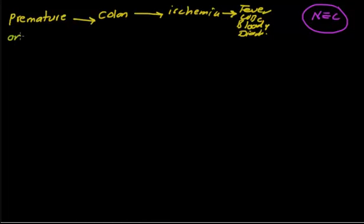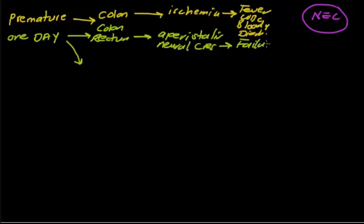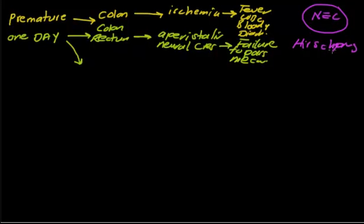For a one-day-old baby, if the affected area is the distal colon and rectum, the problem is aperistalsis — a neural crest problem. The clinical feature will be failure to pass meconium. The diagnosis for this disease is Hirschsprung disease. This is the second congenital GI disease, presenting in a one-day-old baby.